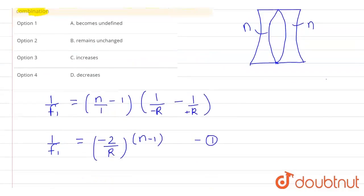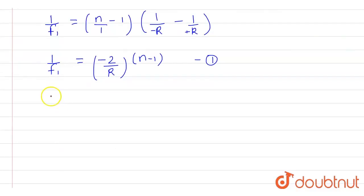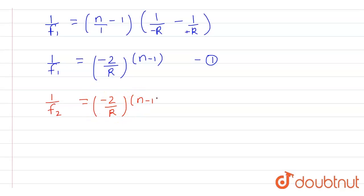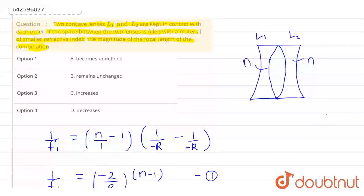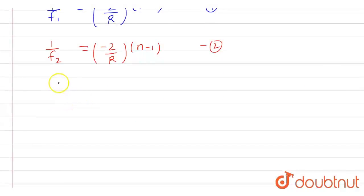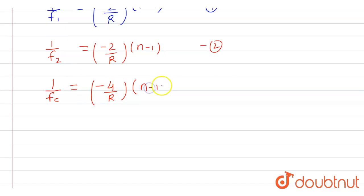Similarly, the focal length due to lens L2 gives 1/f2 = −(2/R)(n − 1) — call this equation 2. The focal length of the combination when the material is not filled is 1/fc = 1/f1 + 1/f2, which equals −(4/R)(n − 1). Call this equation 3. So the focal length of the combination is negative.